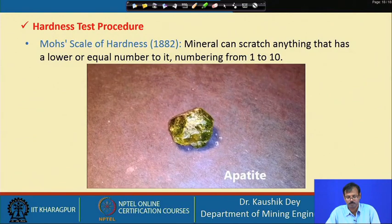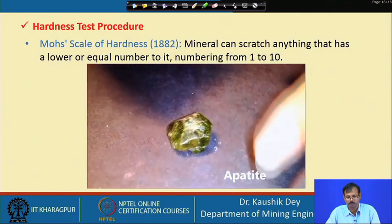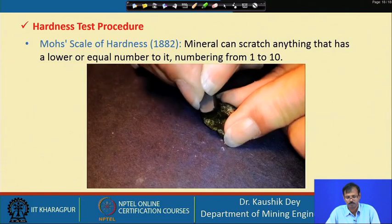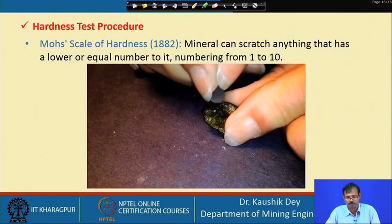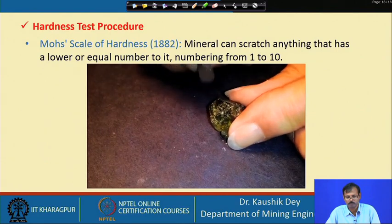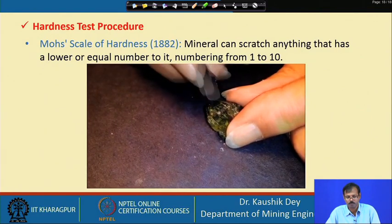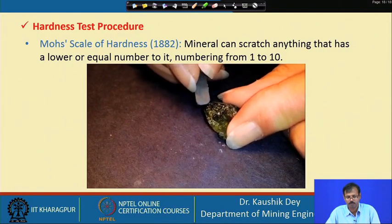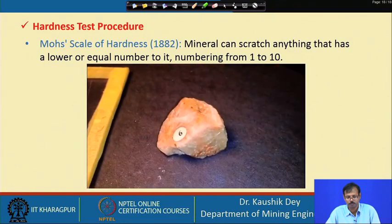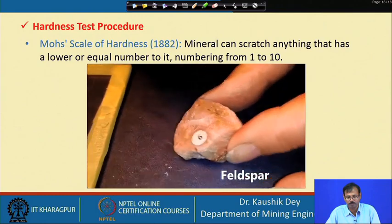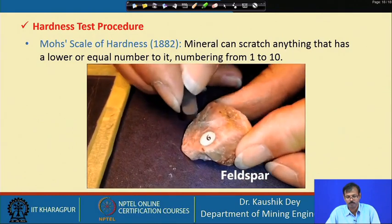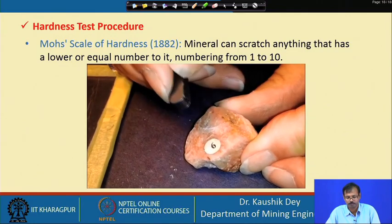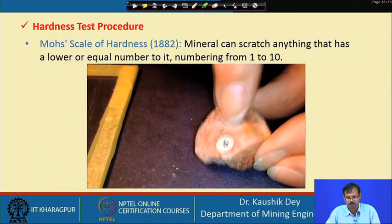Apatite is number 5 on the list. The blade will also scratch it, but it is harder to scratch than fluorite — because apatite is harder. Feldspar is number 6. Where we were able to scratch the others with the blade, this one will not scratch with the blade even when pressing down hard, meaning feldspar is harder than the blade.